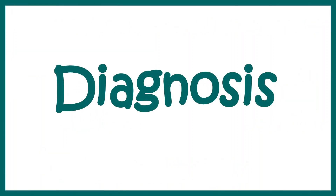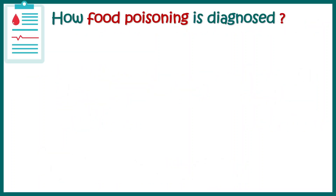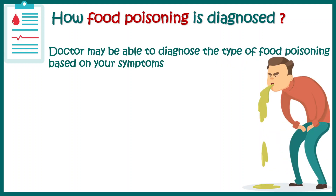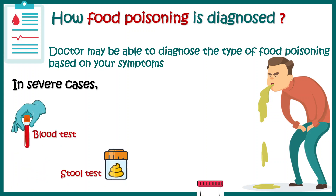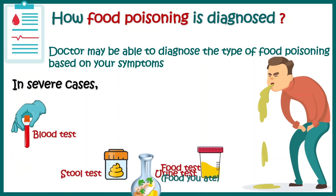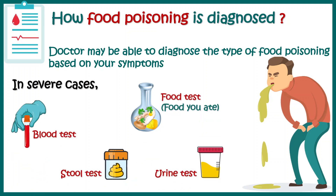The diagnosis is fairly straightforward. If you have symptoms like vomiting, nausea, and abdominal cramps, you most likely have food poisoning. In extreme cases, a blood test, stool test, or urine test may be needed along with analysis of the food you have eaten.